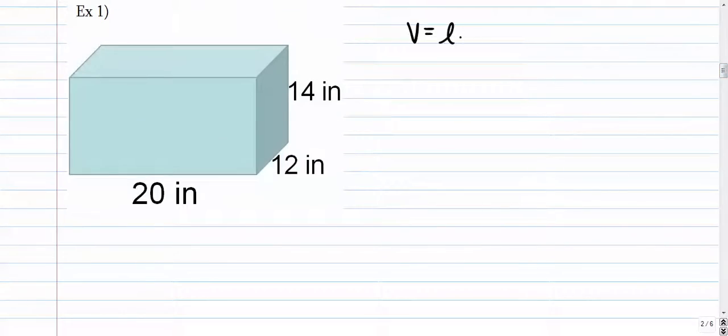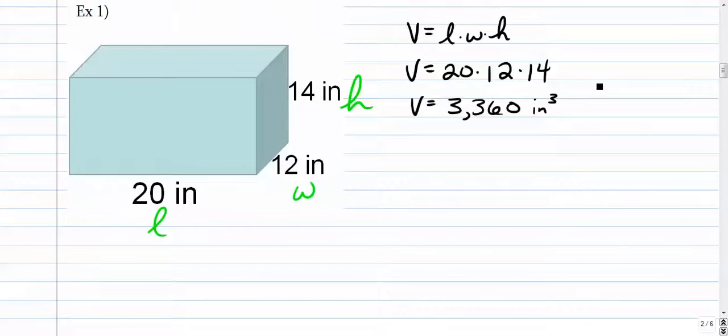So here we've got volume is length times width times height. I'll call that L, I'll call that W, I'll call that H. So here we go. 20 times 12 times 14. 20 times 12 times 14 is 3,360. And put the appropriate label. It's cubic inches. We're talking about space inside. Volume is the amount of space inside. So if you wanted to fill this up with water, you would have to fill it with that much water.